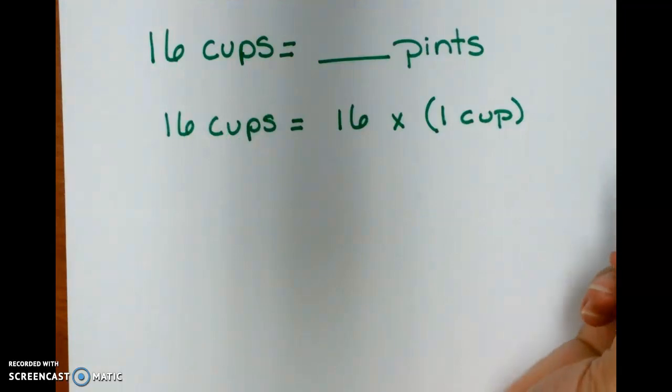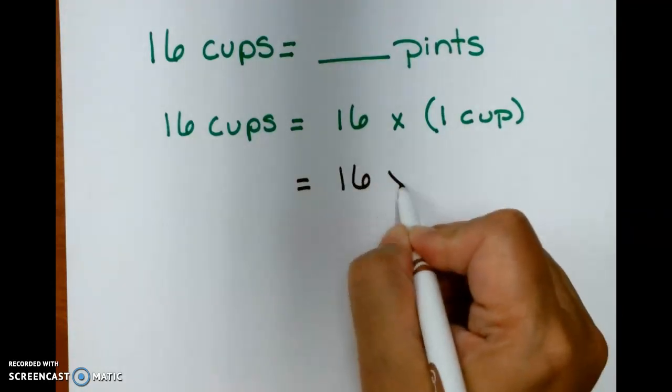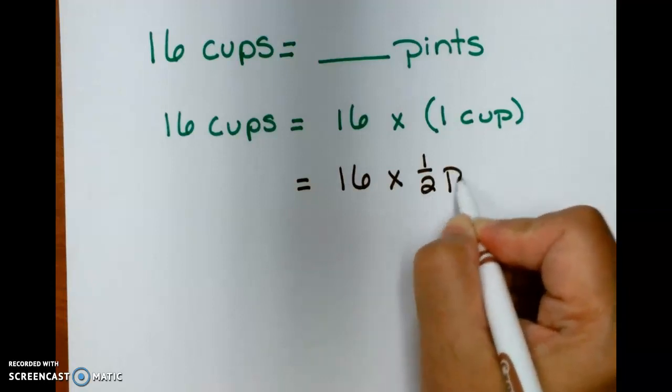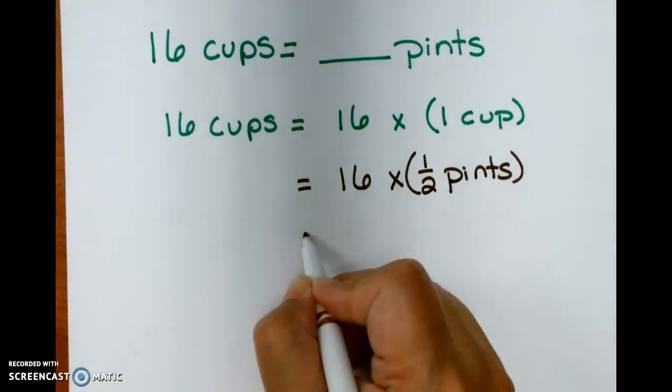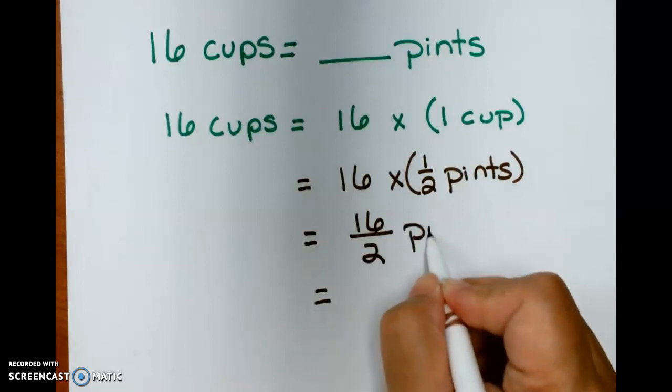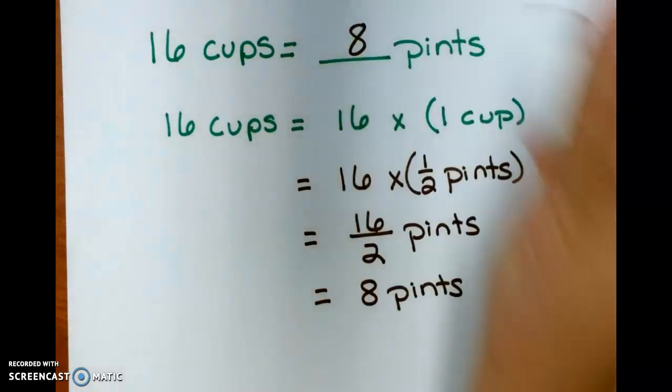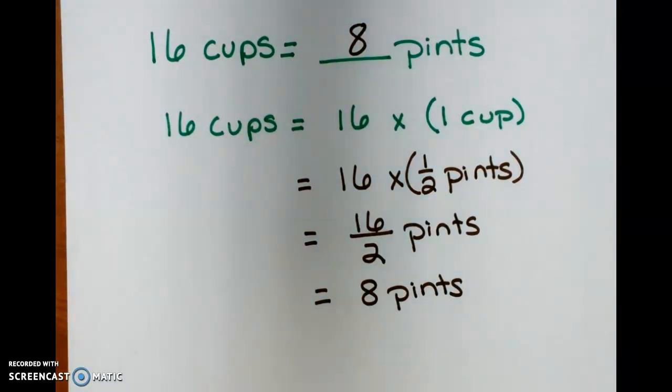Now, my last problem is converting cups to pints. I have sixteen cups, and I want to figure out how many pints that is. So sixteen times one cup. There are two cups in one pint, so one of those is equal to half a pint. So I have sixteen times one-half pints, which equals sixteen halves, which equals eight pints, because one-half of sixteen is eight. So I have sixteen cups equals eight pints.